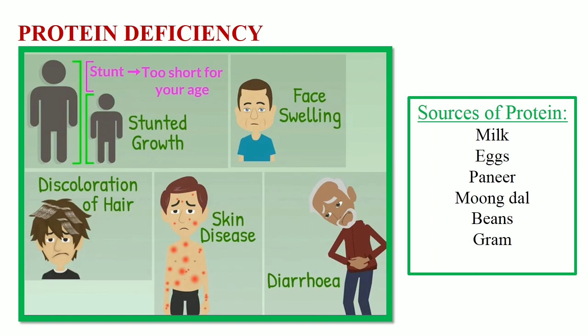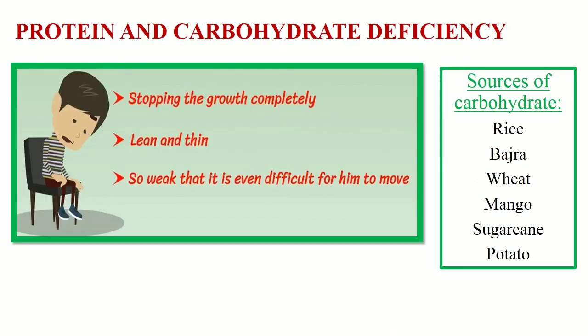Protein deficiency: Proteins are very important components of food. Protein helps in building up our body. If the diet is deficient in protein, then it may lead to stunted growth, discoloration of hair, skin diseases, swelling of the face and diarrhea. Such a person should include protein-rich food in their diet. Good sources of protein are milk, eggs, paneer, mung dal, beans and gram.